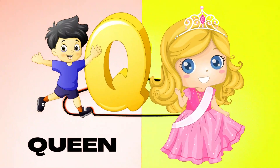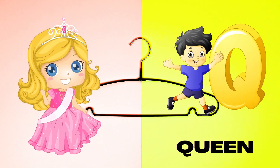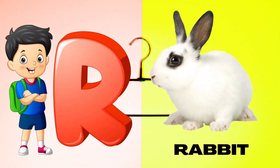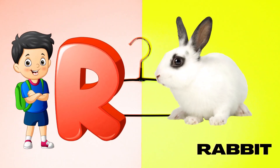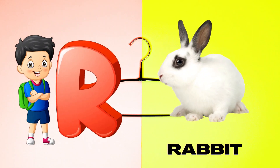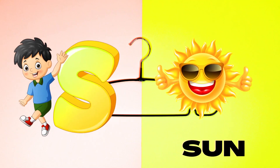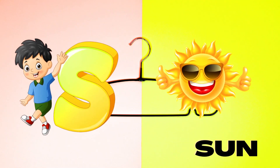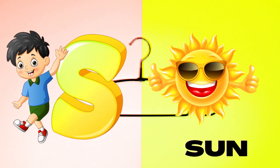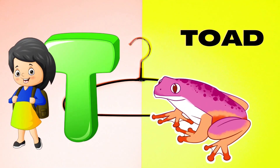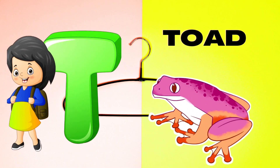Q is for Queen, Q-Q-Queen. R is for Rabbit, R-R-Rabbit. S is for Sun, S-S-Sun. T is for Toad, T-T-Toad.